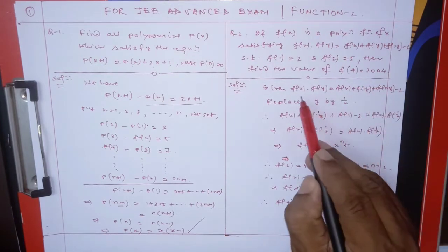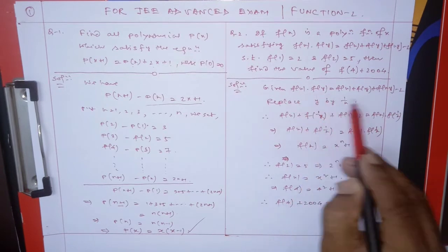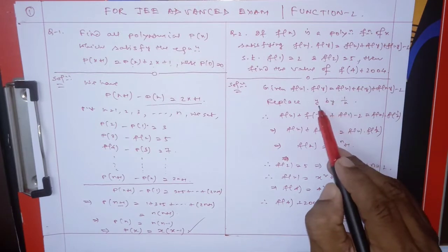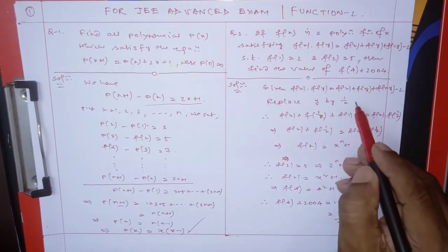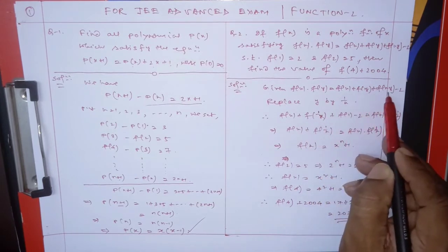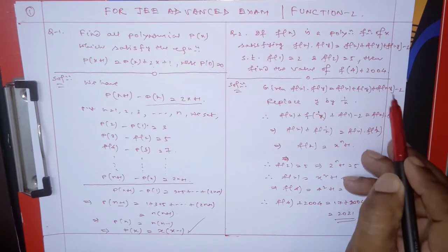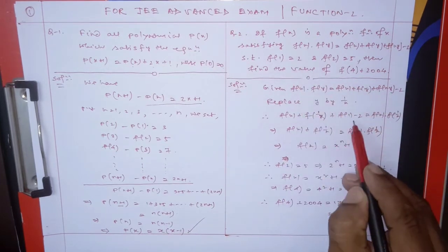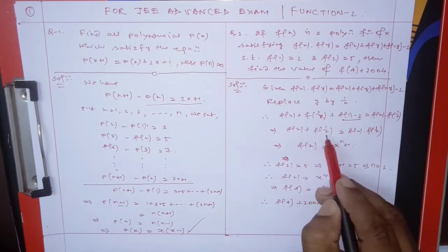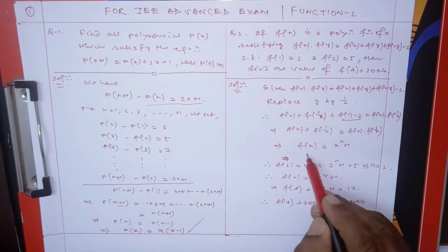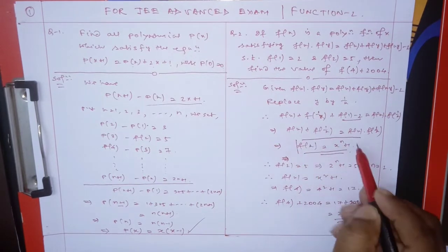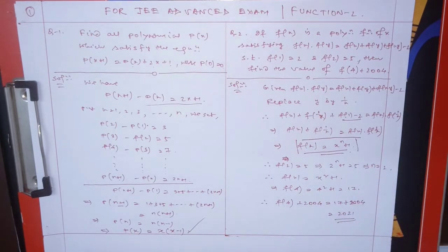For this type of functional equation, eliminate y by replacing y with 1/x. We get f(x) + f(1/x) = f(1) - 2 + ... Since f(1) = 2, the terms cancel: f(x) + f(1/x) simplifies. The polynomial satisfying this form is f(x) = xⁿ + 1.